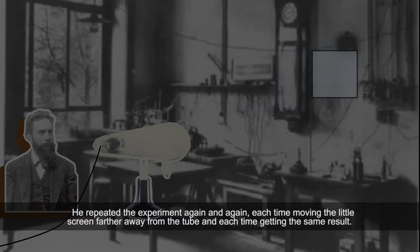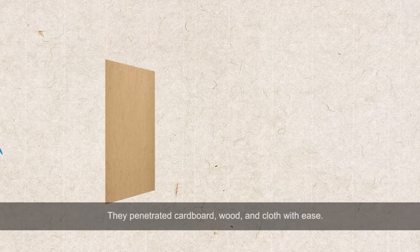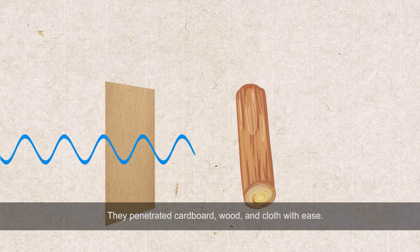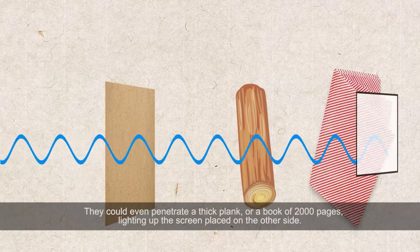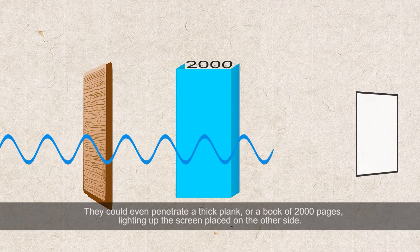He repeated the experiment again and again, each time moving the little screen farther away from the tube, and each time getting the same result. The invisible rays were found to have a penetrative power hitherto unimagined. They penetrated cardboard, wood, and cloth with ease. They could even penetrate a thick plank or a book of 2,000 pages, lighting up the screen placed on the other side.